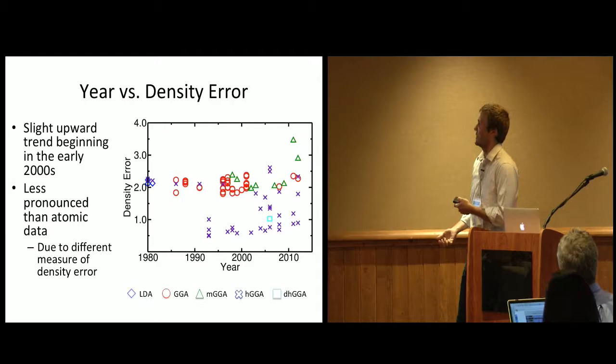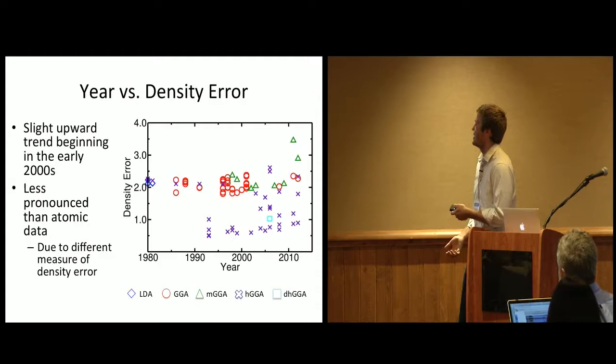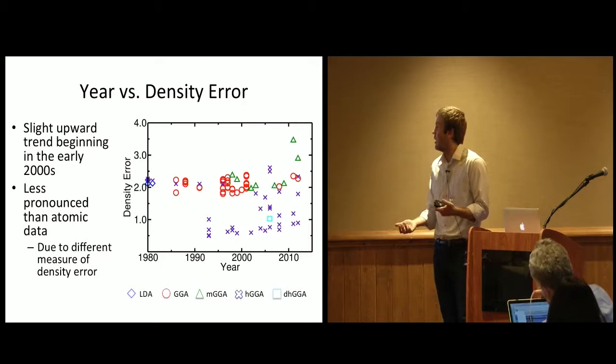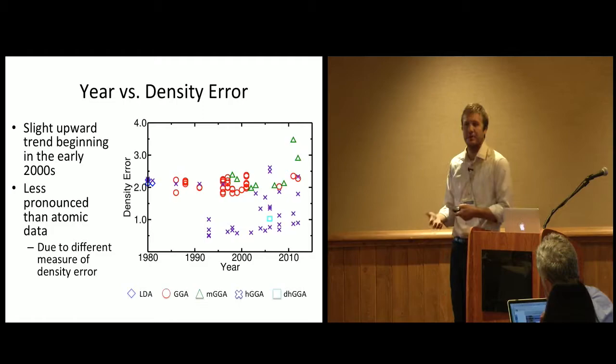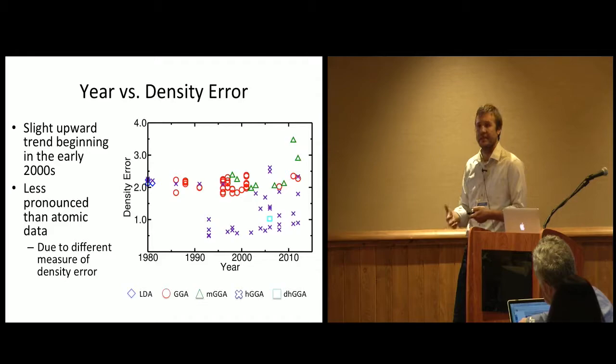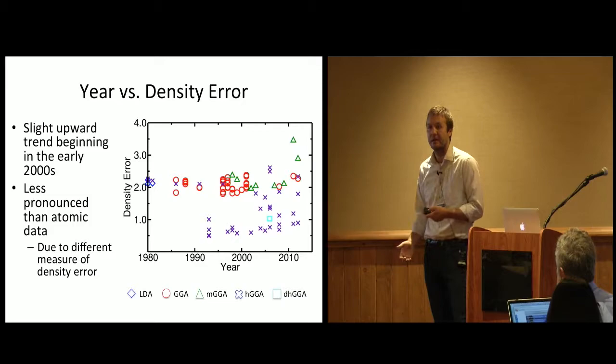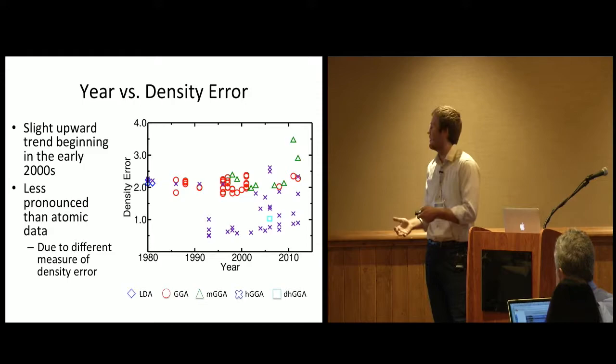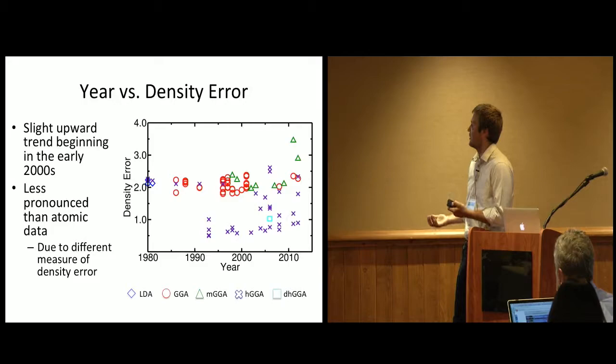For that, we're going to graph the year versus density error. This corresponds to the graph from the previous study. We see an increase starting in the year 2000 very similar to what they saw. Our increase is less pronounced, but it's still there. Part of the reason it's less pronounced is due to the different measure of density error. If you regraph their data with just the density error instead of their average of the density, gradient, and Laplacian, you get something that looks more similar to this. We think even part of the reason they used that measure was because it increased the increase in error starting from the year 2000. So we broadly agree with what they see.